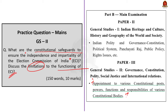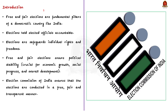The question is very straightforward. We have to write about the constitutional safeguards available to the ECI, then discuss the limitations in the functioning of this body. In the introduction, you can write about the importance of free and fair elections in a democratic country like India — free and fair elections are fundamental pillars of democracy, they hold elected officials accountable, safeguard individual rights and freedoms, and ensure political stability by allowing a peaceful transfer of power, which is crucial for economic growth, social progress, and overall development.